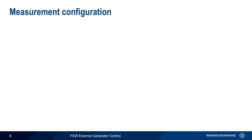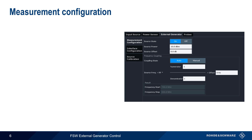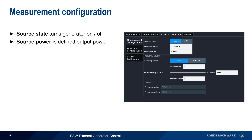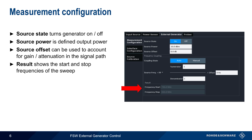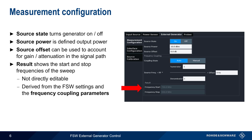Next we'll look at the Measurement Configuration tab. Source State toggles the generator on or off, and Source Power defines the generator output power. An offset can be configured to account for any gain or attenuation in the signal path from the generator to the device under test. The result pane at the bottom of the screen shows the start and stop frequencies of the sweep, which are not directly user-editable, but are derived from the FSW settings and the frequency coupling parameters.